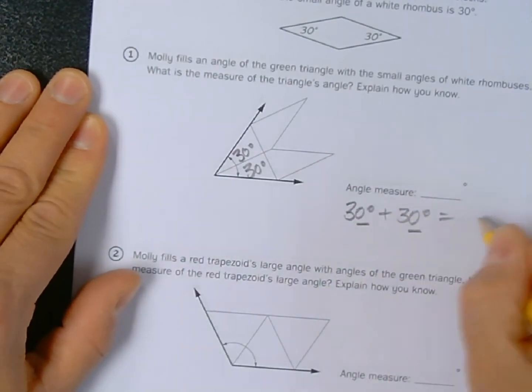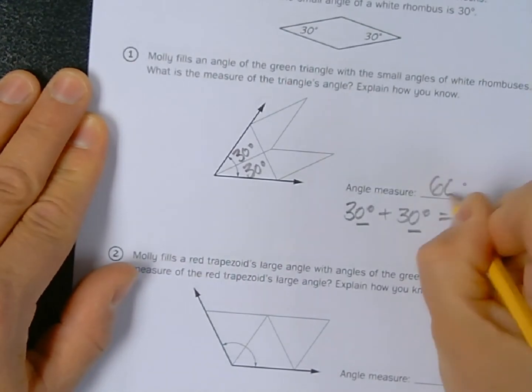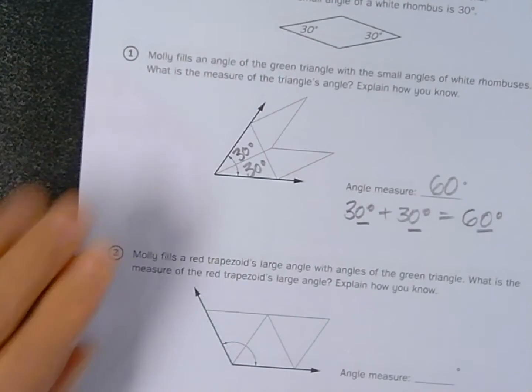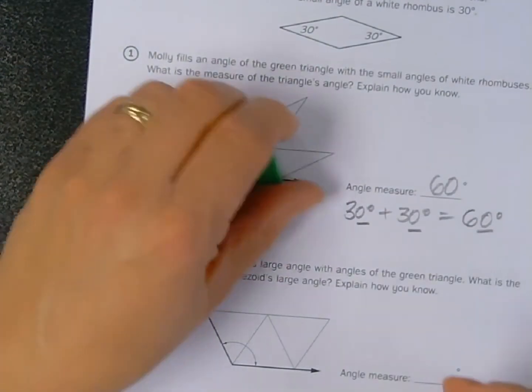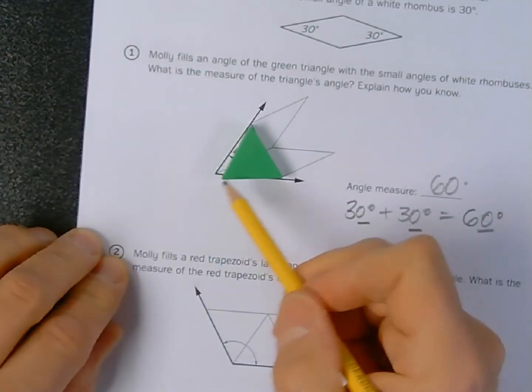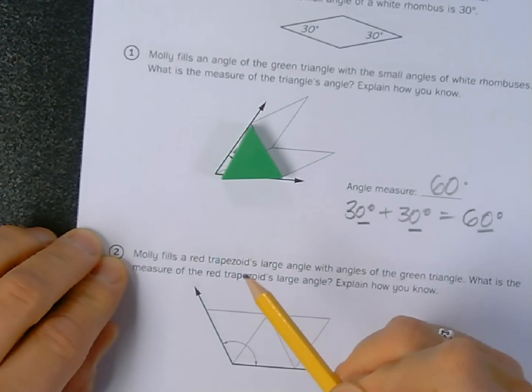3 plus 3 is 6, so 3 tens plus 3 tens is going to give me 6 tens, otherwise known as 60 degrees. So I can infer that this angle of this triangle is 60 degrees.